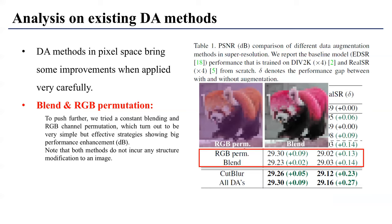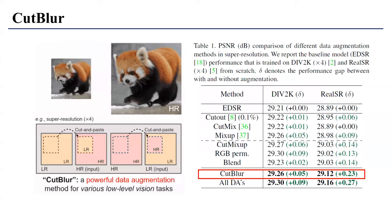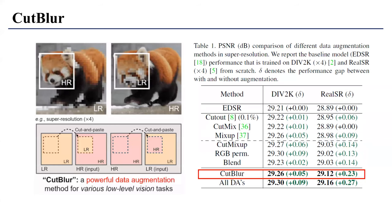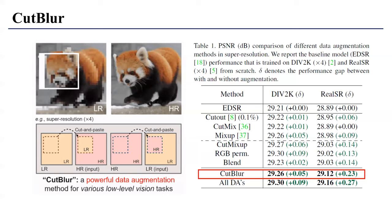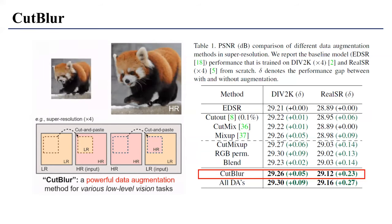Pushing further, surprisingly we found that if we use RGB permutation or color blending that do not incur any structural modification to an image, the performance is boosted remarkably. These analysis results naturally brought us to our proposed method CutBlur, which randomly cuts and pastes a low-quality patch into a high-quality image. As CutBlur cuts and pastes between corresponding locations of low-resolution and high-resolution patches, it minimizes the boundary effect. It benefits from utilizing all pixels unlike cutout, which discards pixels, and also imposes the network to learn identity mapping, providing a good regularization effect.